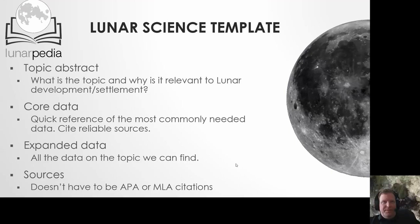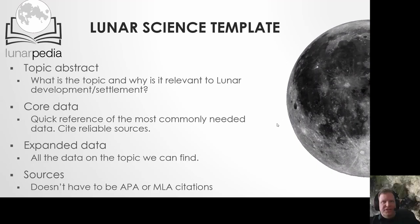The template would have a topic abstract at the top of the page telling about the topic and why it's important, and how it relates to lunar development or settlement. The next section would be core data — the most relevant data with sources, primarily for people just looking for hard data quickly. A key feature would be properly citing sources where you found the data, because we'd like Lunarpedia to be a reference where people can confirm that a source is genuine.